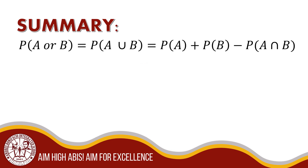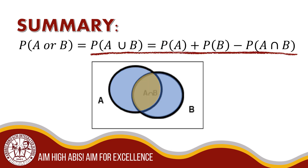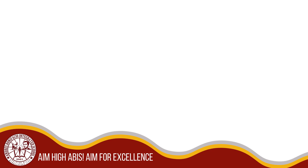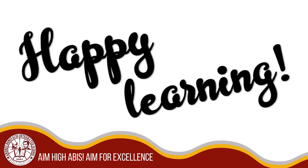To find the probability of the union of two events with common outcomes, we add the probabilities of the two events and subtract the possibility that both events occur simultaneously. The probability of neither A nor B of an event is the difference between 1 and the probability that the event occurs. That is all, students — thank you for listening.